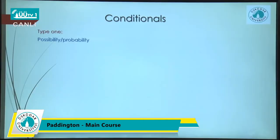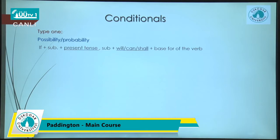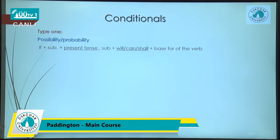When something is probable or possible, we use conditional type 1. The structure is: 'if' plus subject plus present tense, then a comma. Here we have present tense — not necessarily simple present, because in type 1 we are allowed to use simple present, present continuous, and even sometimes present perfect. Then after the comma the second part starts with subject plus one of these modals: will, can, or shall. Will and can are more probable choices.